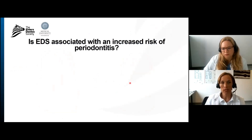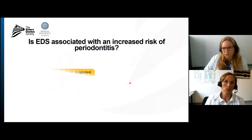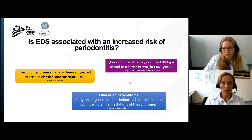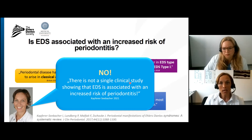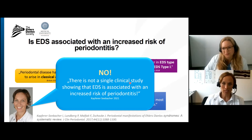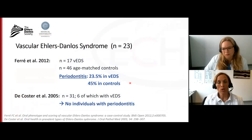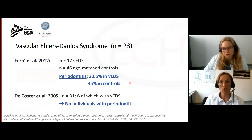The question is whether people with EDS have an increased risk of periodontitis. This is claimed again and again by some societies and some authors, but what I can tell you today is that this is not true. We don't have a single clinical study showing that people with EDS have an increased risk of periodontitis — with one exception: periodontal EDS. For vascular EDS, we have two well-designed clinical studies that found no increased prevalence of periodontitis; there was more gum bleeding, but not periodontal destruction.